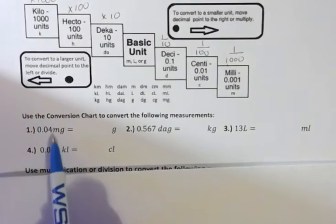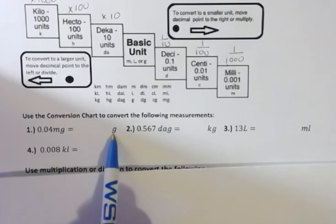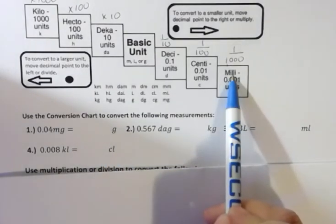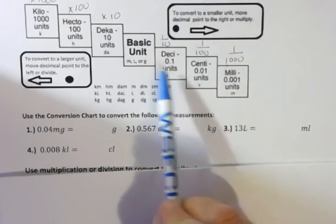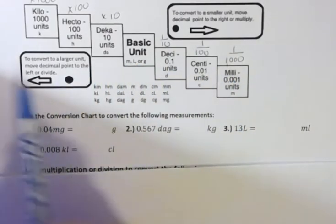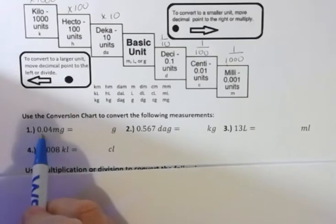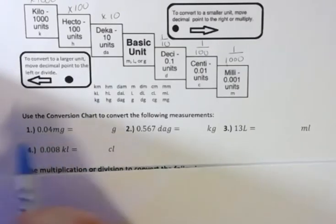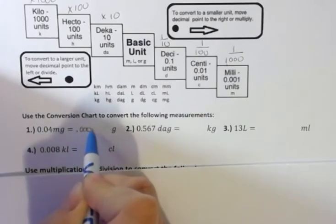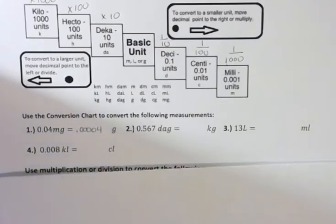In the first one we have 0.04 milligrams and we want to change that into grams. To go from milligrams to grams, we're going three places to the left. We're going to move this three places to the left, so we'd have one, two, three, and then the 0.04 grams. It's very small—a milligram is one-thousandth of a gram, so it makes a really small part of a gram.